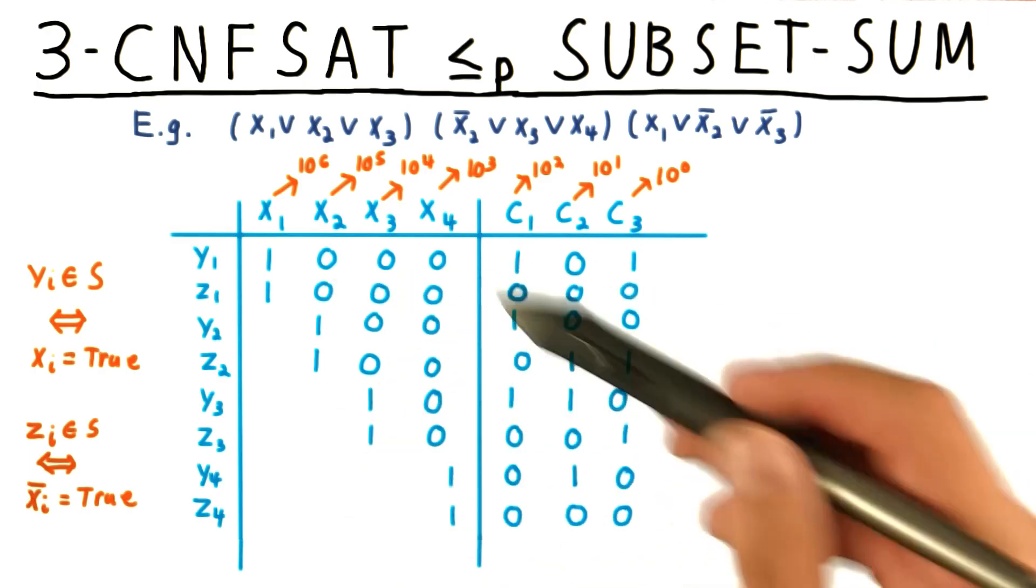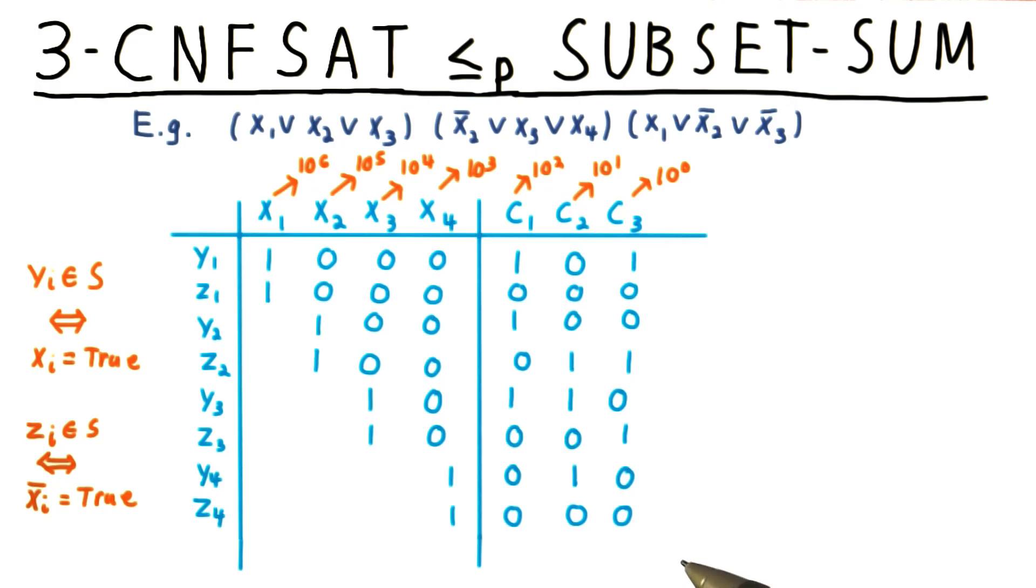These, then, are the numbers that we want to include in our set A. Now, we need to choose our desired total, k.